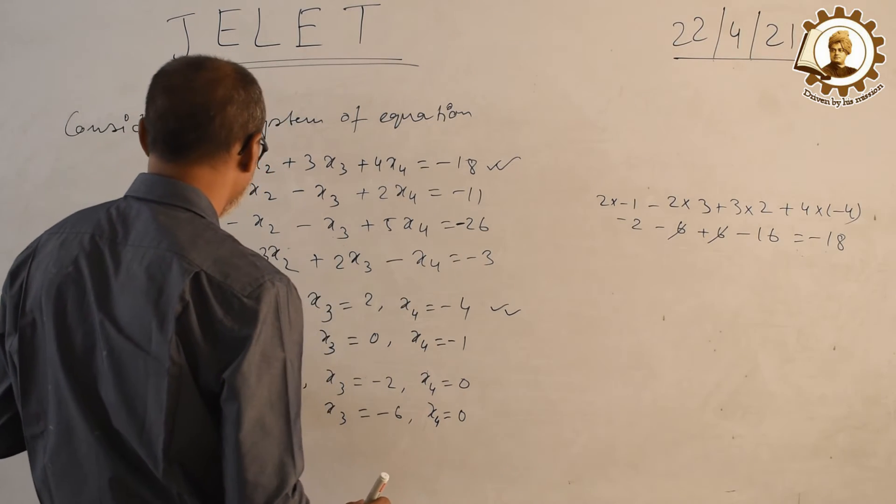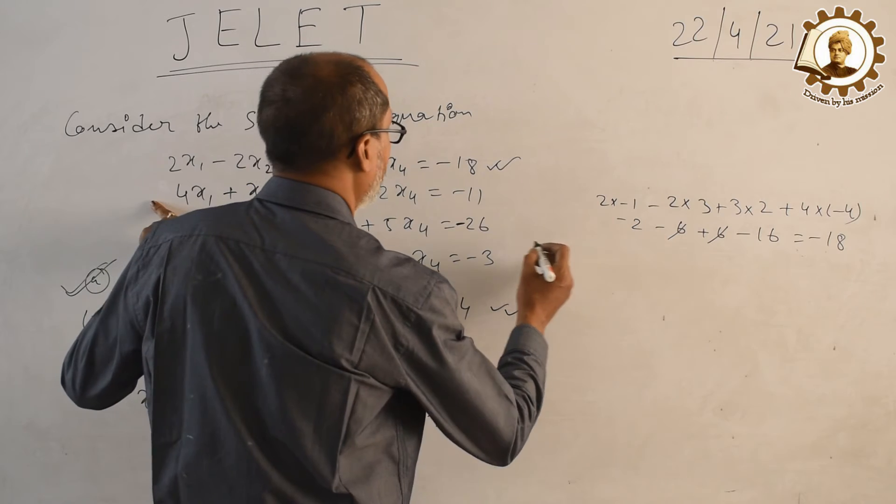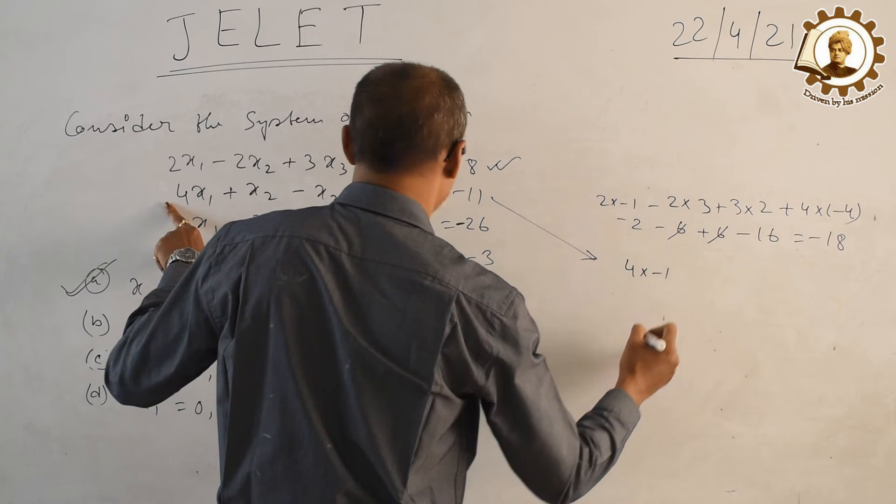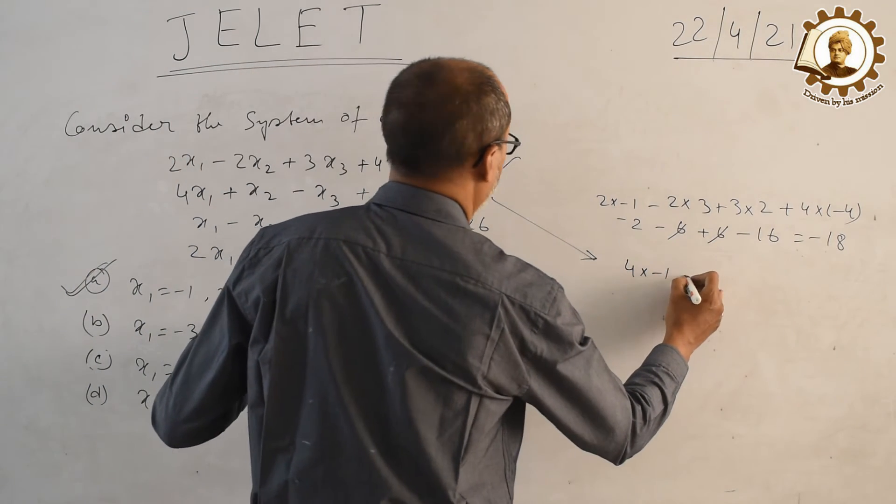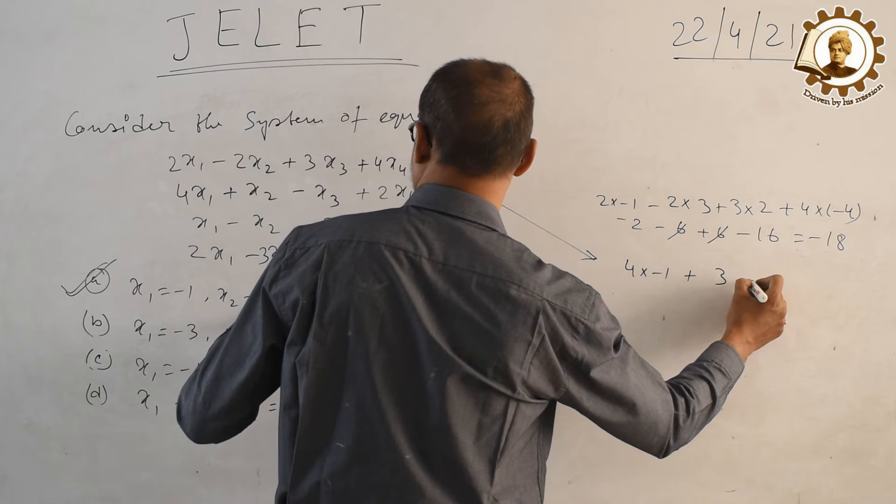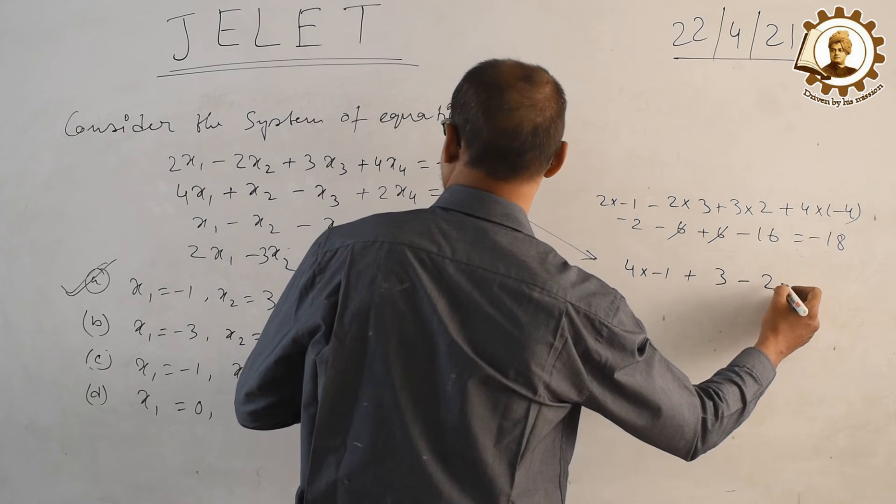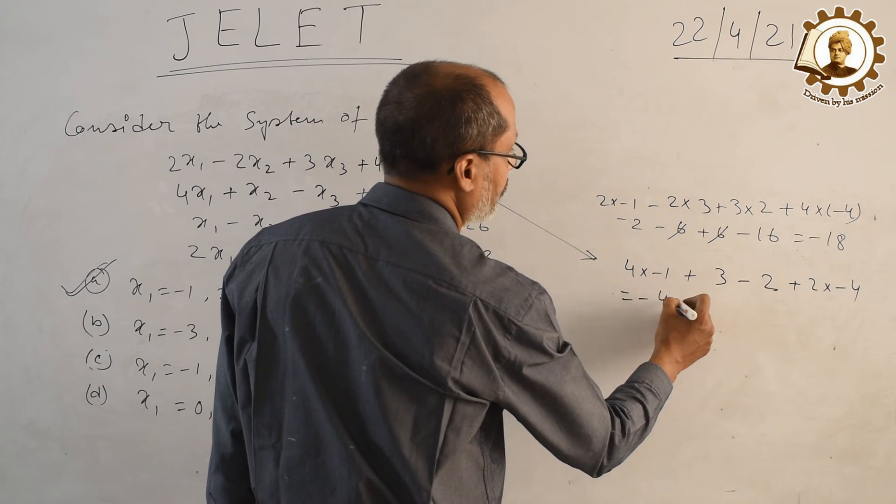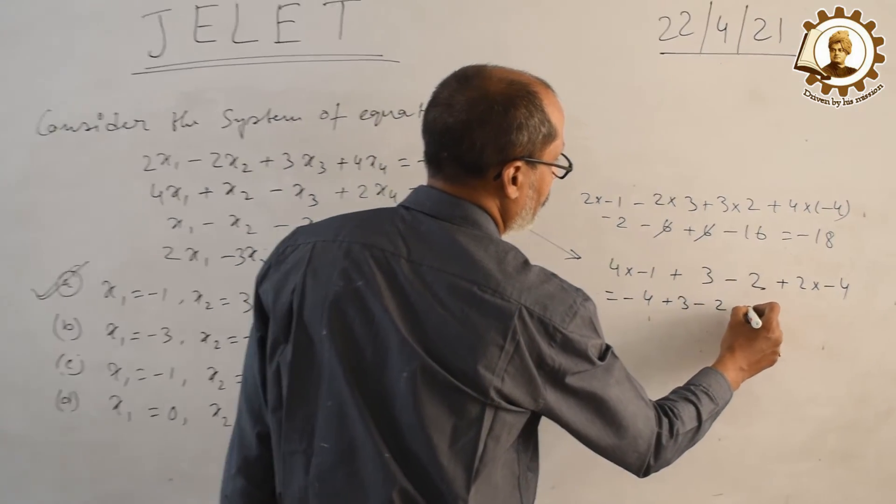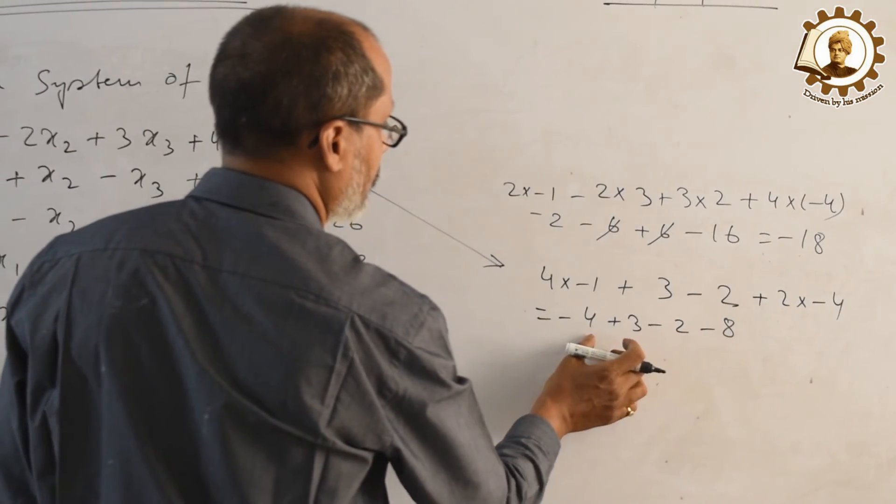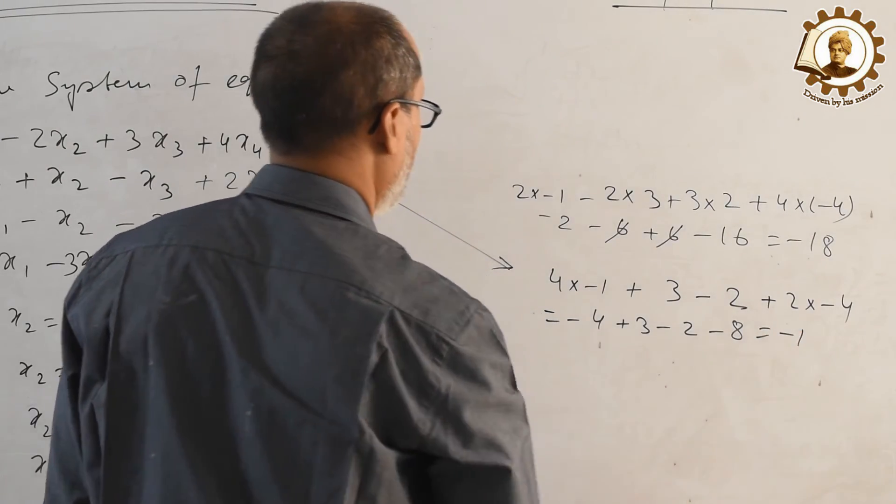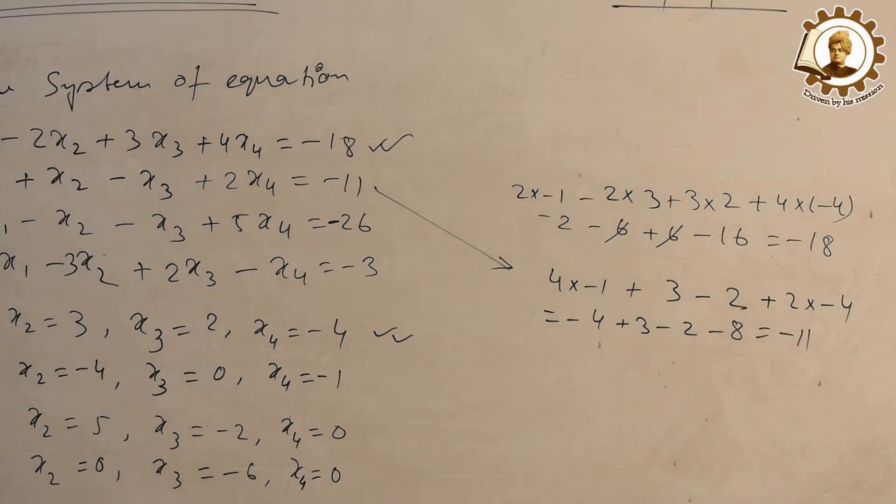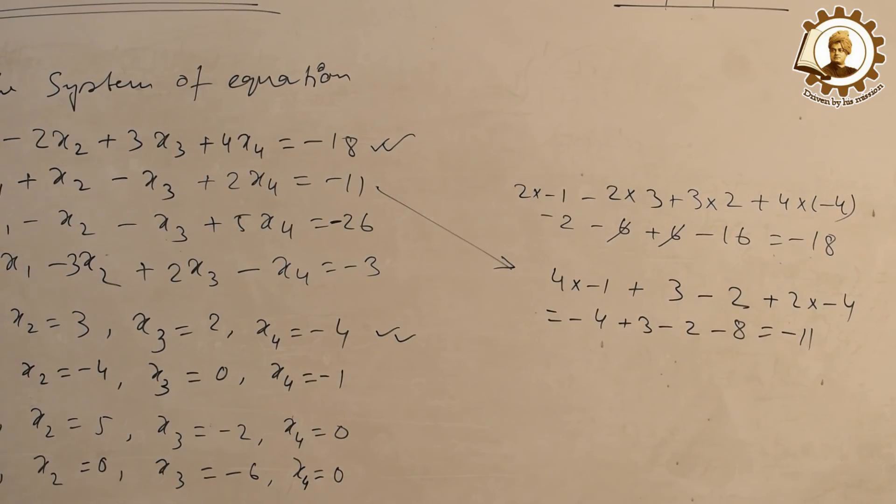We can check this value with another equation. Suppose 4 into minus 1 plus 3 minus 2 plus 2 into minus 4. So this is minus 4 plus 3 minus 2 minus 8 equals minus 11. So this also satisfies the second equation.